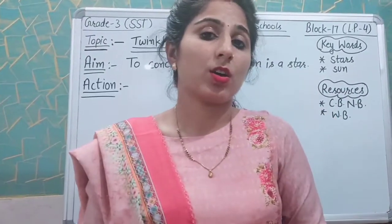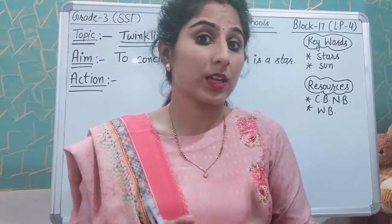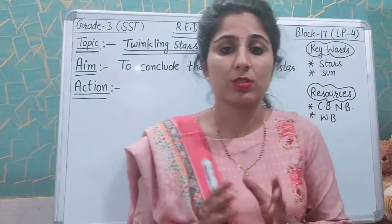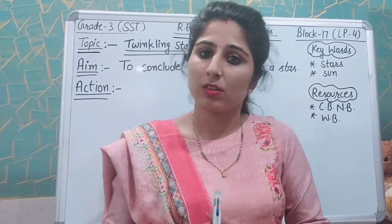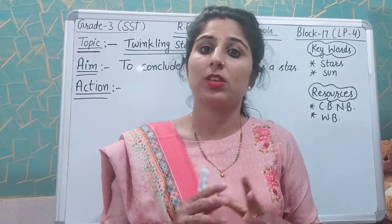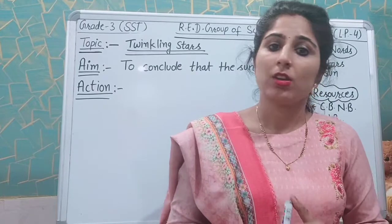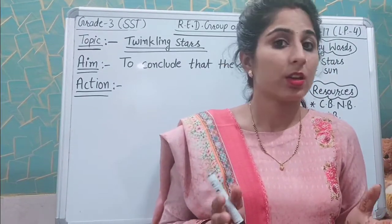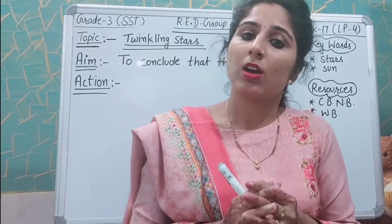How do the stars look, students? The stars look very small. These are countless and white in color, and these are twinkling. There are thousands of stars and we cannot count them — the stars are countless.